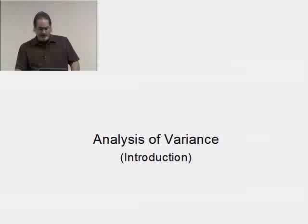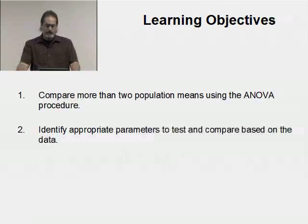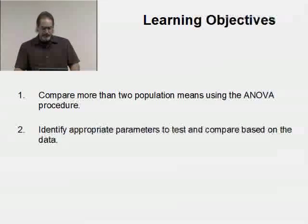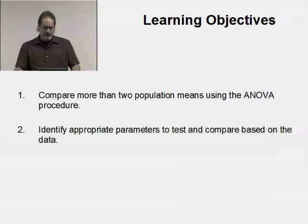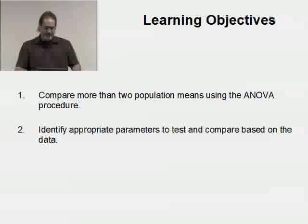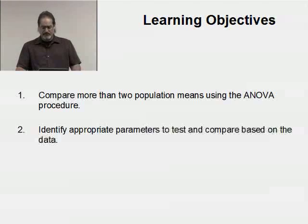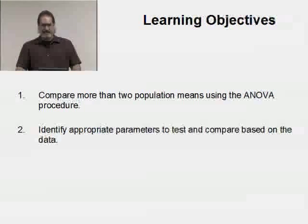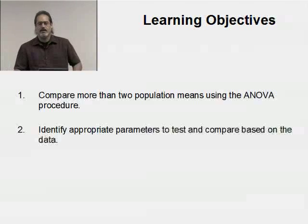Let's now look at the idea of analysis of variance. The learning objectives: we want to compare more than two population means using the ANOVA, which stands for analysis of variance procedure, and identify appropriate parameters to test and compare based on the data.